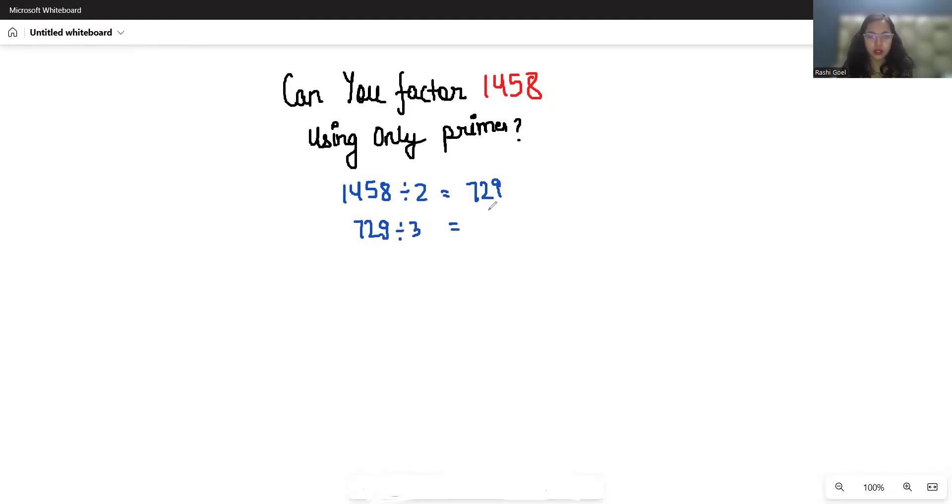Now 243 divided by 3 gives 81. 81 divided by 3 gives 27. 27 divided by 3 gives 9. 9 divided by 3 gives 3, and 3 divided by 3 gives 1. So there are six threes, it's amazing.